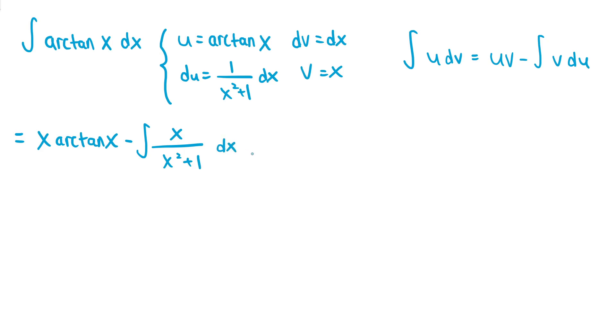In order to do the integral of x over x squared plus 1, we would like to do a substitution with u equals x squared plus 1. But that means we would need to have a 2x in the numerator, since the derivative of x squared plus 1 is 2x.